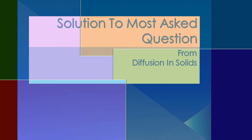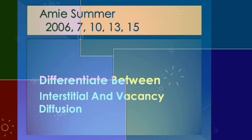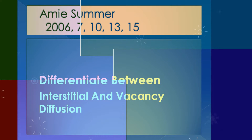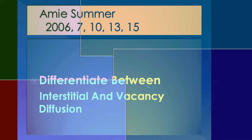What is the difference between interstitial and vacancy diffusion? Interstitial diffusion is a much faster process, and vacancy diffusion is a much slower process.